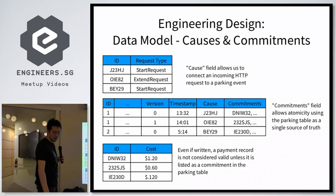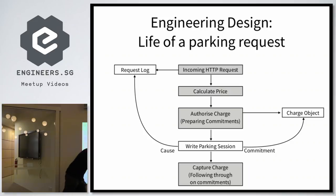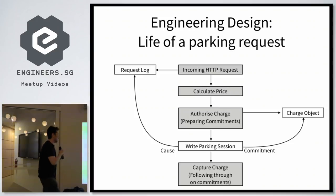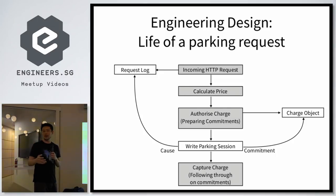Similarly, the data model allows for causes and commitments — the idea being that we want atomicity. Atomicity means all at once or nothing at all. We treat one database, the parking session, as a backbone of truth for what has or has not happened. Because we have to do payments, we do what's called a two-phase commit: you authorize the charge, write the parking session, and if the parking session write is successful, you capture the charge to the third-party payment provider. This means there's never a case where we've taken payment and not given a parking session, or given a parking session and not taken payment. If it fails at any point, we boot back up, recover, and follow through on all commitments written to the core backbone of truth database.